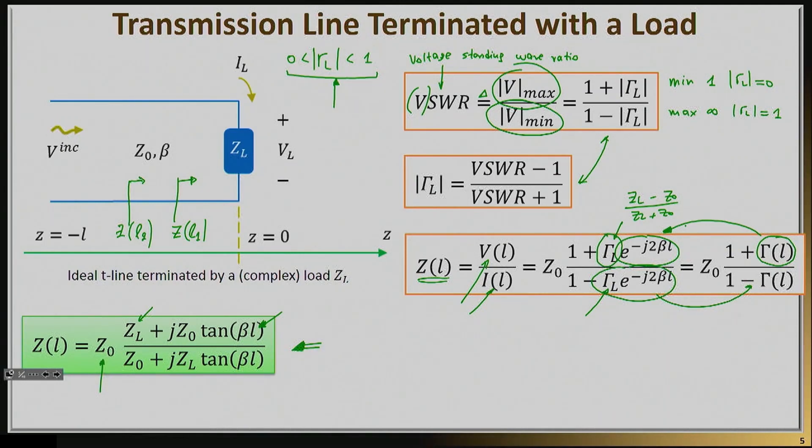And the second main result here is that the transmission line impedance is not constant. At L equals 0, it clearly will equal ZL, meaning the impedance of the load, but the minute you start moving away from this load, that impedance will actually change. It will not be equal to ZL anymore.